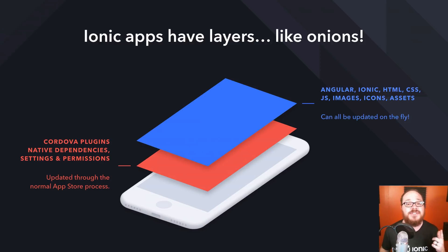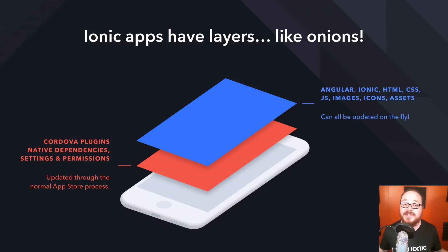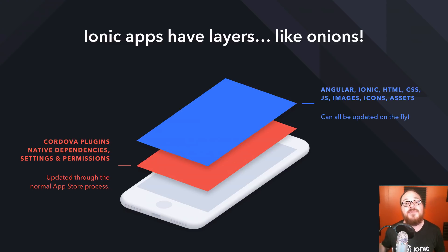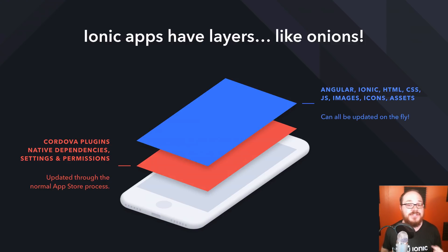Ionic Deploy allows you to update any non-native changes you want to make in your app, bypassing the app stores and going directly to your users. Ionic apps have layers like onions — we've got Cordova plugins, native dependencies, settings, permissions, all that native layer stuff which has to be updated through the normal App Store process. But then you've got 99% of your Ionic app: Angular, Ionic, custom HTML, CSS, JavaScript, images, icons, assets — all sorts of stuff that can be updated on the fly using our Deploy service.